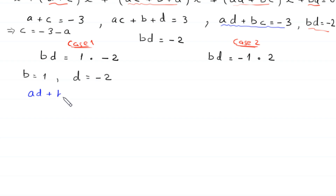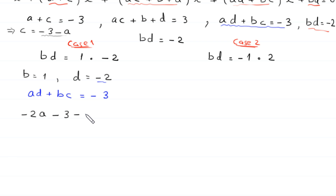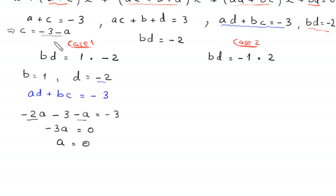With d = -2, b = 1, and c = -3 - a, the equation ad + bc = -3 becomes: a(-2) + 1(-3 - a) = -3, which gives -2a - 3 - a = -3, so -3a = 0. Therefore a = 0, and c = -3 - 0 = -3.